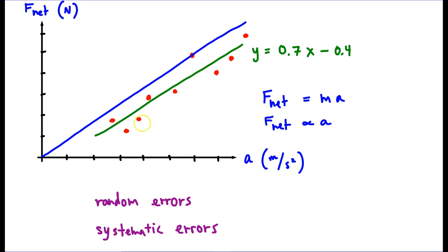Does our graph go through the origin? No. It has an intercept of negative 0.4, and the equation tells us that.